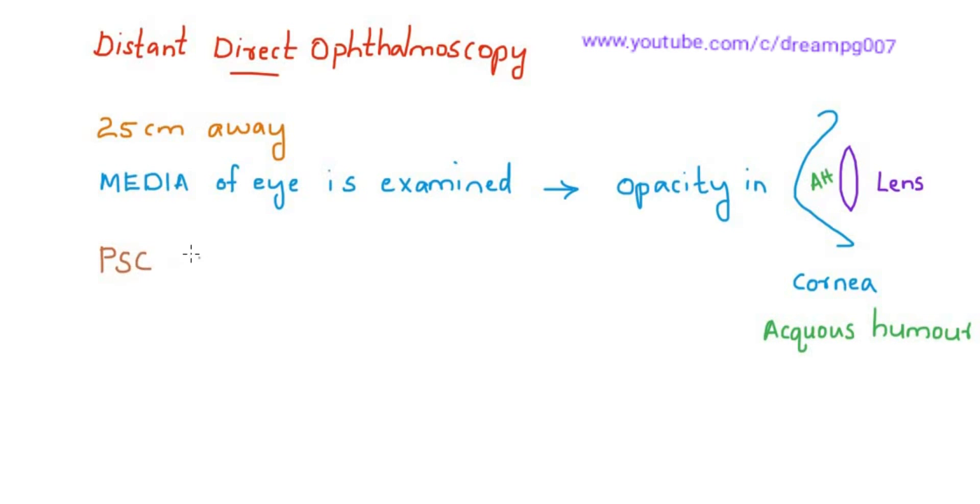Hence, posterior subcapsular cataract is best appreciated with the distant direct ophthalmoscope. Two important drugs that can lead to posterior subcapsular cataract are steroid and chloroquine.